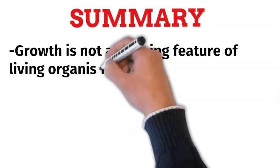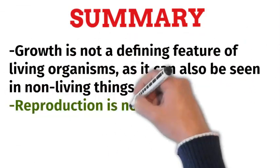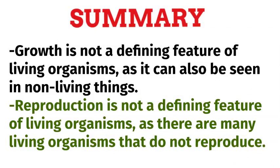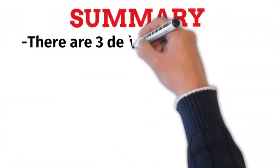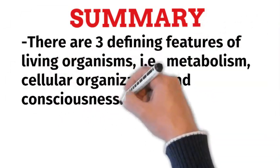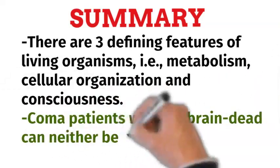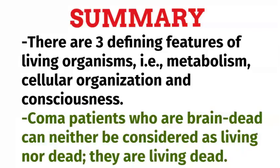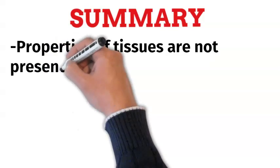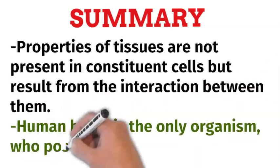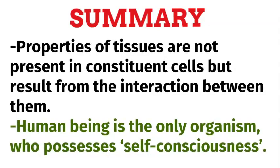Summary: Growth is not a defining feature of living organisms, as it can also be seen in non-living things. Reproduction is not a defining feature of living organisms, as there are many living organisms that do not reproduce. There are three defining features of living organisms: metabolism, cellular organization, and consciousness. Coma patients who are brain dead can neither be considered living nor dead — they are living dead. Properties of tissues are not present in constituent cells but result from the interaction between them. Human beings are the only organisms who possess self-consciousness.